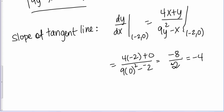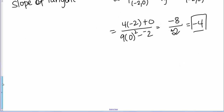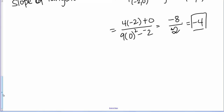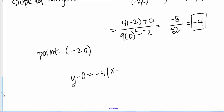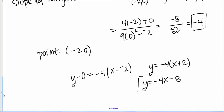Now we have everything we need to write the equation of the tangent line. We're given the point (-2, 0) and we have the slope -4. We can use point-slope form. So: y - 0 = -4(x - (-2)), which gives y = -4(x + 2). Distributing the -4, we get y = -4x - 8. And that's the equation of the tangent line.